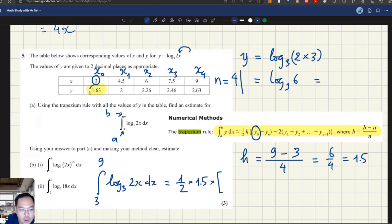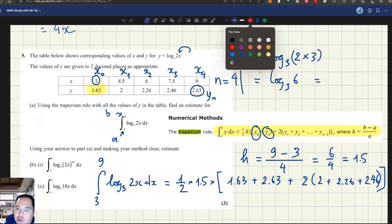y₀ is this value 1.63, corresponding to the value x₀. y_n is this value 2.63, and continue plus 2 times y₁, which is 2, plus y₂ is 2.26, plus y₃ is 2.46.